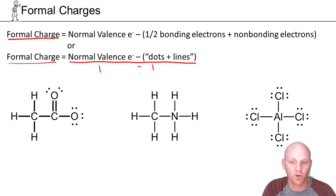Now in the case of carbon, carbon's normal number of valence electrons is four, and minus one line, two lines, three lines, four lines, four minus four is zero, no formal charge. Same thing for the next carbon, four minus one, two, three, four lines is zero.